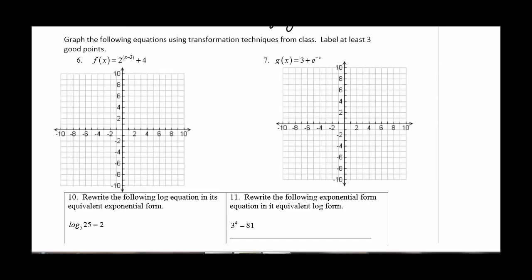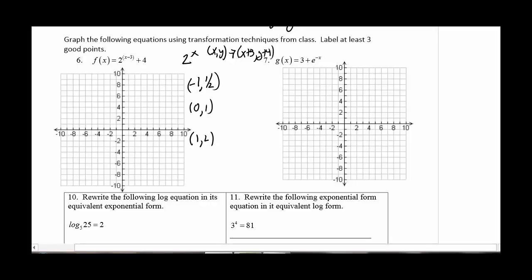Okay, number 6 and 7. We are just demonstrating that we know how to use transformation rules to graph our equations. So the first thing I'm going to do is I'm going to make a list of the parent points. So for here, that's really 2 to the x. So my parent points would be negative 1 comma 1 half and then 0 comma 1 and then 1 comma 2. And then I'm going to set up a mapping. So all of my ordered pairs look like x comma y. So x comma y. And they're going to go to, so that x minus 3 really means add 3 to the x's and then add 4 to the y's.